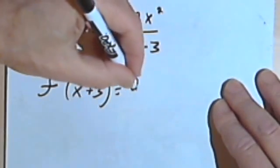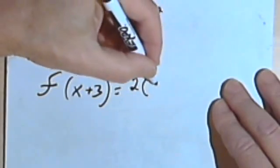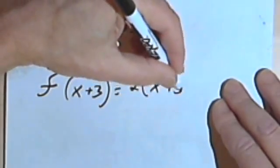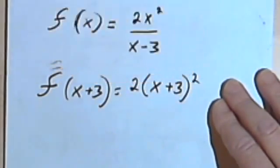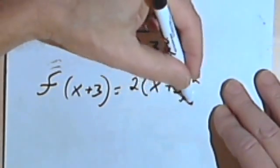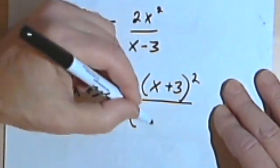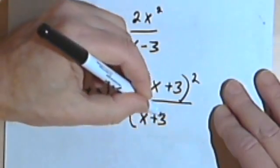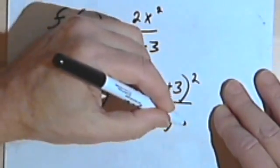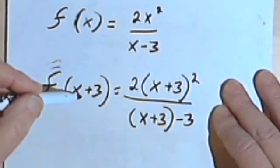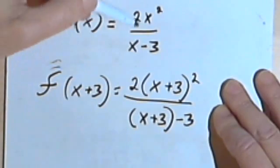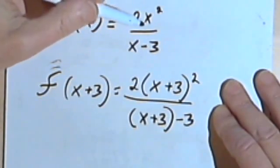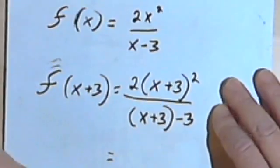So I'll have 2 times the expression x plus 3 and I'm squaring that, and that's going to be over x plus 3 minus 3. All I did was replace the x plus 3 into every place where I had an x, and then I'll just evaluate what this is.